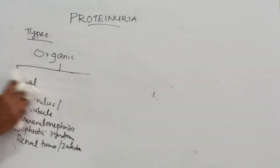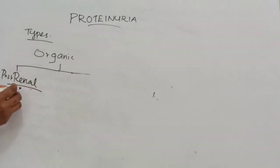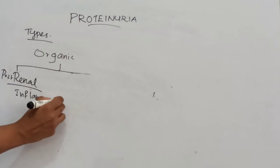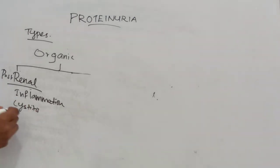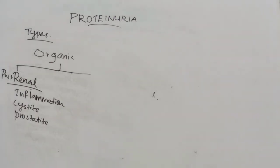Coming to post-renal proteinuria: this occurs with inflammation of the urinary tract, as in acute and chronic cystitis, prostatitis, and urethritis. These are the causes of post-renal organic proteinuria.